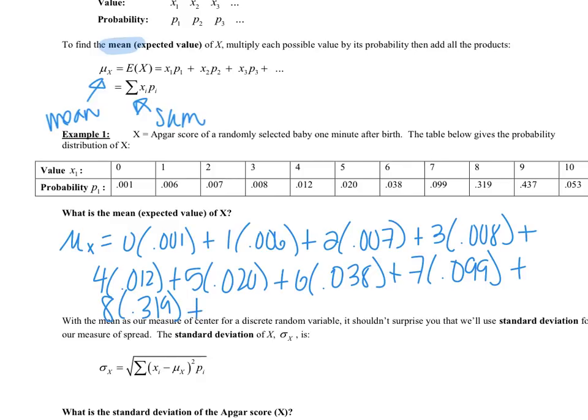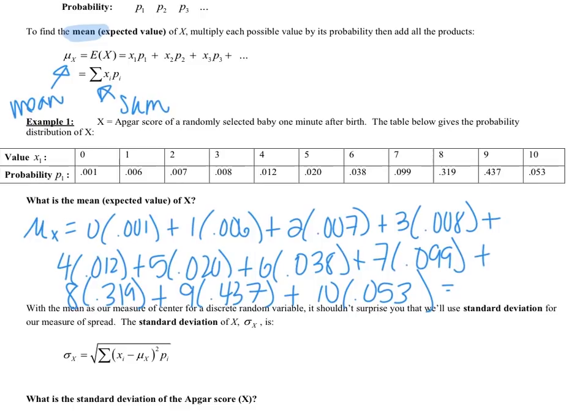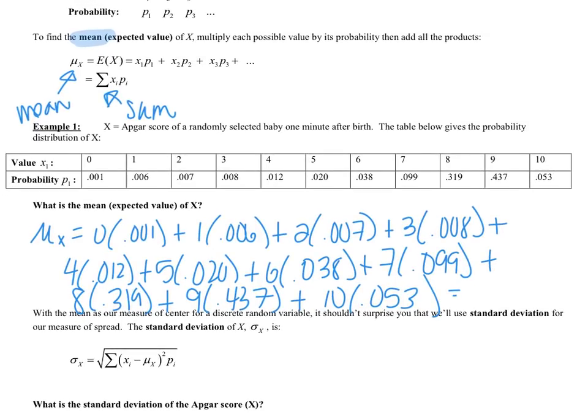Now when putting this into your calculator, make sure that you have the correct number of decimal places and you're just being careful what you enter in. And then just to save time, I'm just going to tell you guys what the mean is, but you should get 8.128 for the mean. So that was a lot to do by hand.